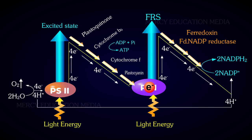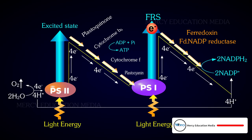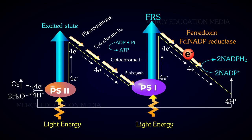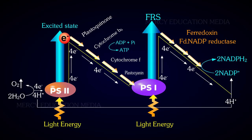When the molecules in PS1 are excited, the electrons are released, creating an electron deficiency or a hole in PS1. This electron is then transferred to ferredoxin to reduce NADP+. When the molecules in PS2 get excited, electrons are released and transferred to fill the hole in PS1 through plastoquinone, cytochrome B6, cytochrome F, and plastocyanin. When the electron is transported between plastoquinone and cytochrome F, ADP is phosphorylated to ATP.